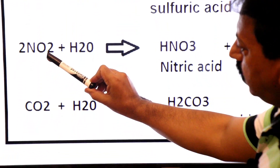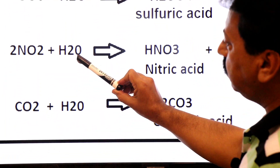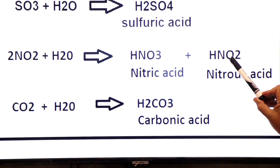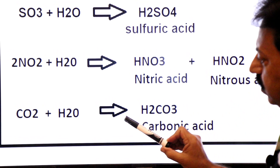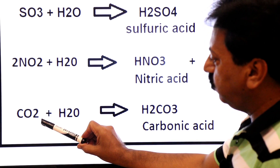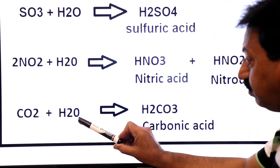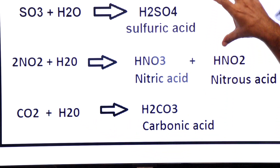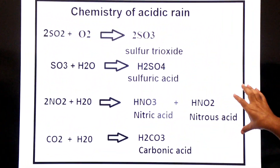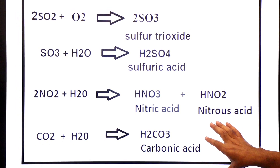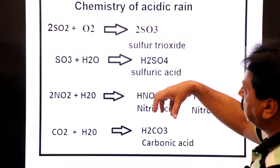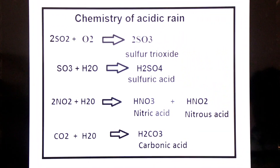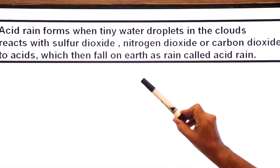Two molecules of nitrogen dioxide, when they mix up with the water of clouds, form HNO3 nitric acid and HNO2 nitrous acid — these also form in clouds. And when carbon dioxide goes up from the burning of fossil fuels and mixes up with the water of clouds, it creates carbonic acid H2CO3. So in this way, sulfuric acid, nitric acid, nitrous acid, and carbonic acid form in clouds and are included in the rain — this rain is called acidic rain.